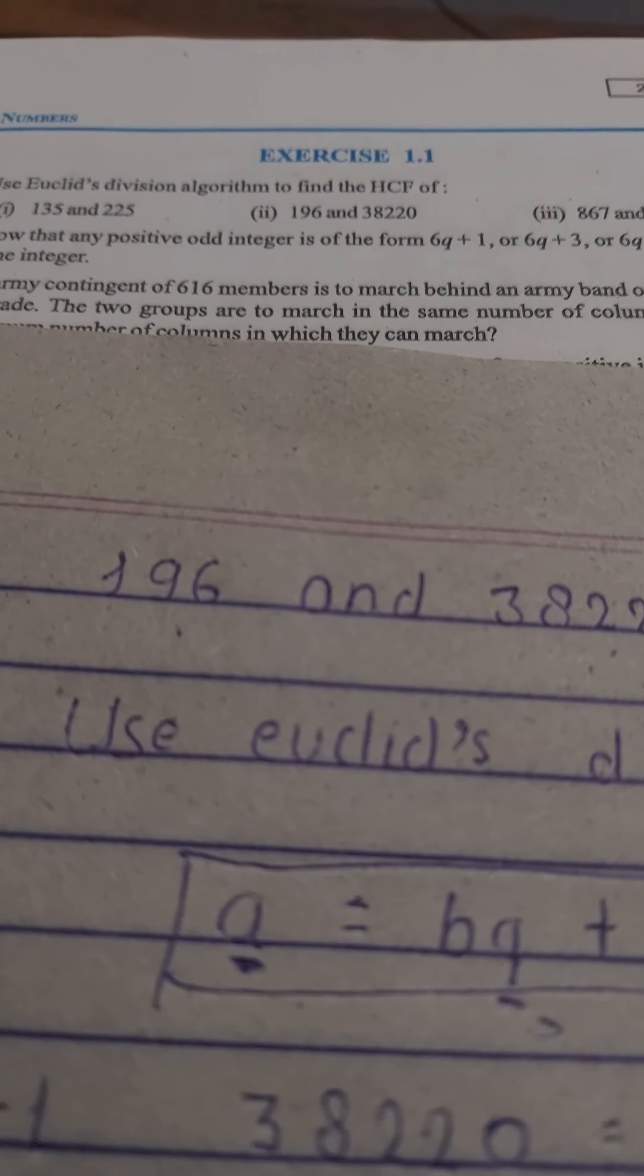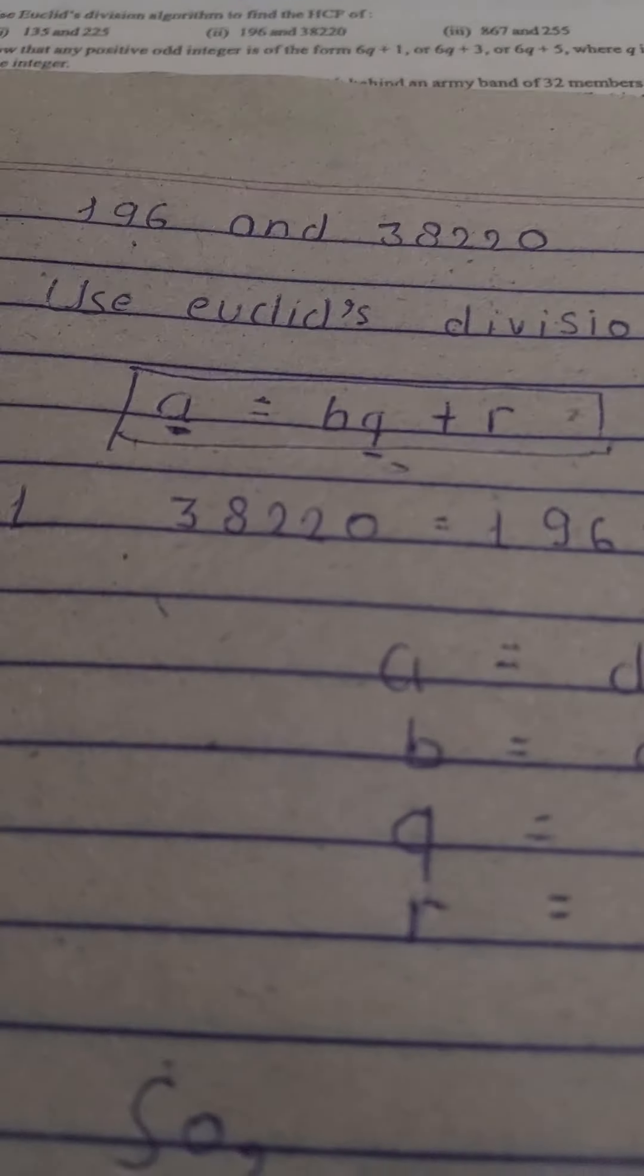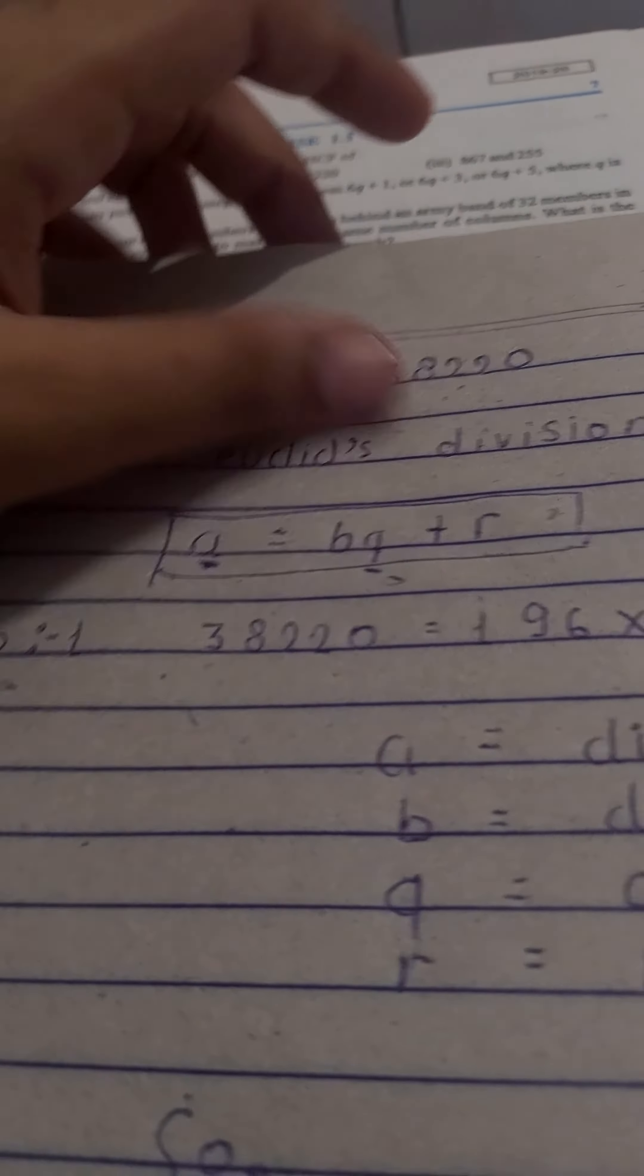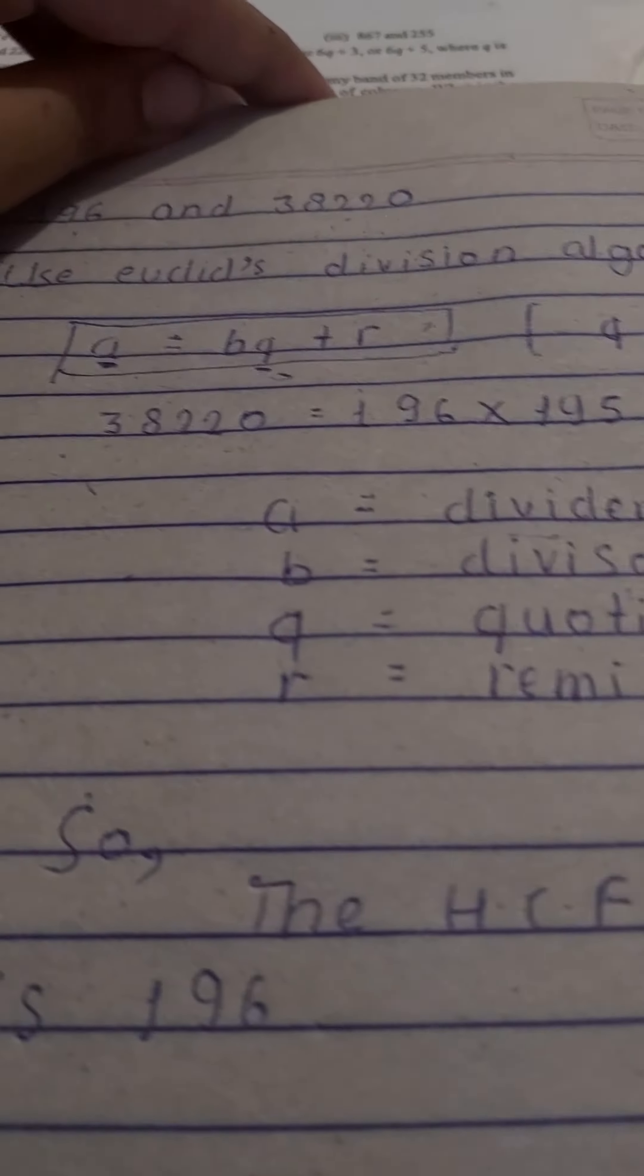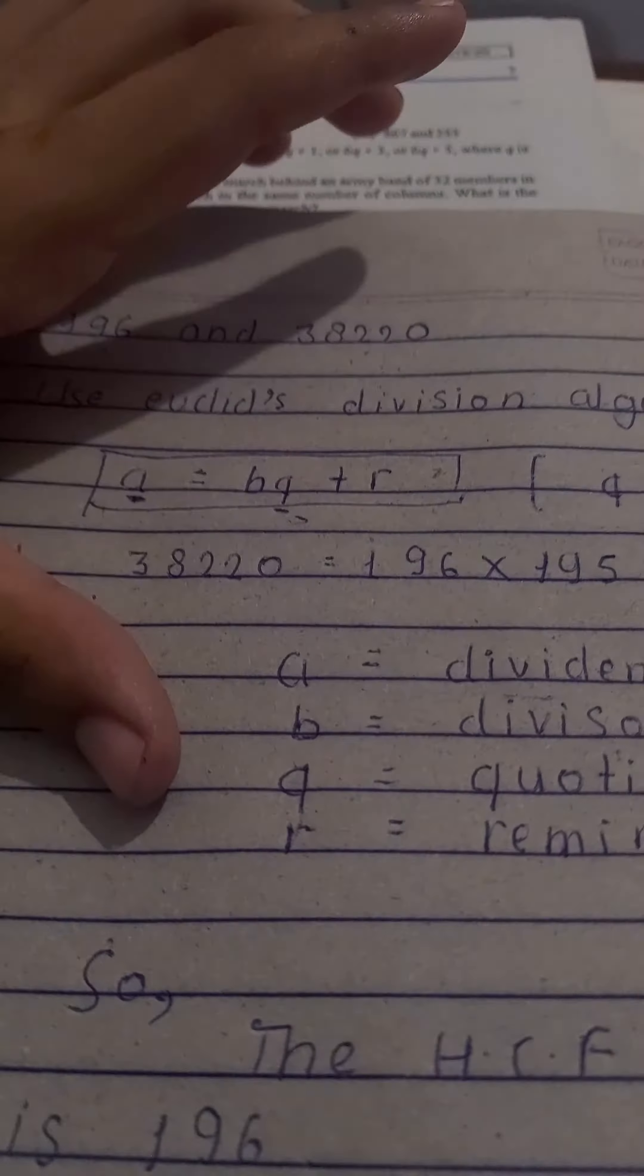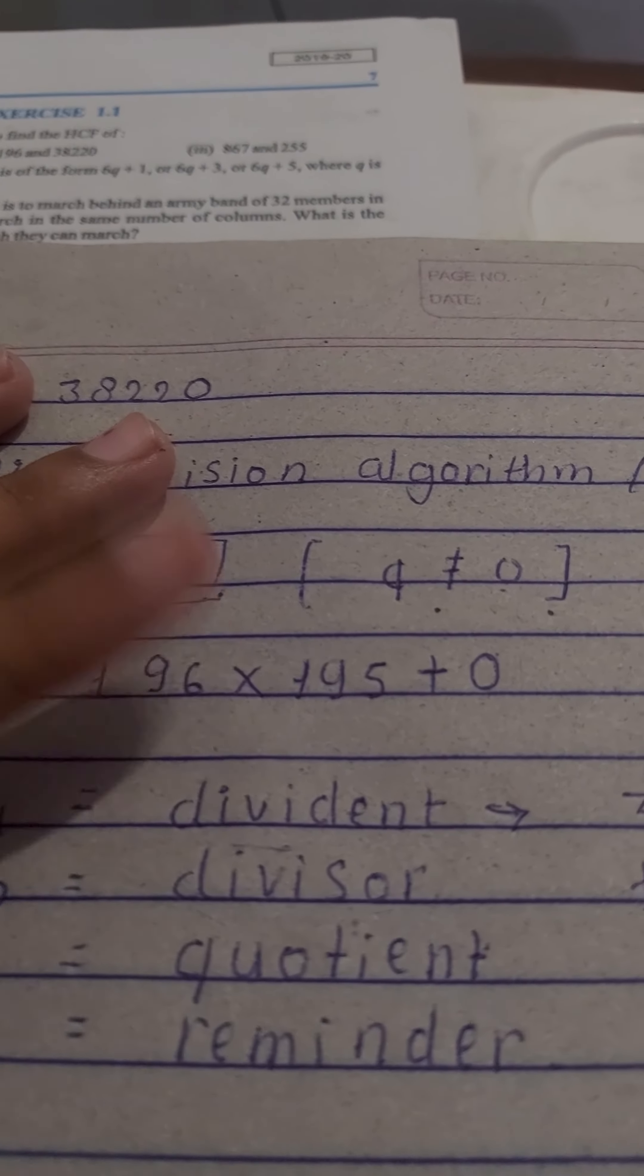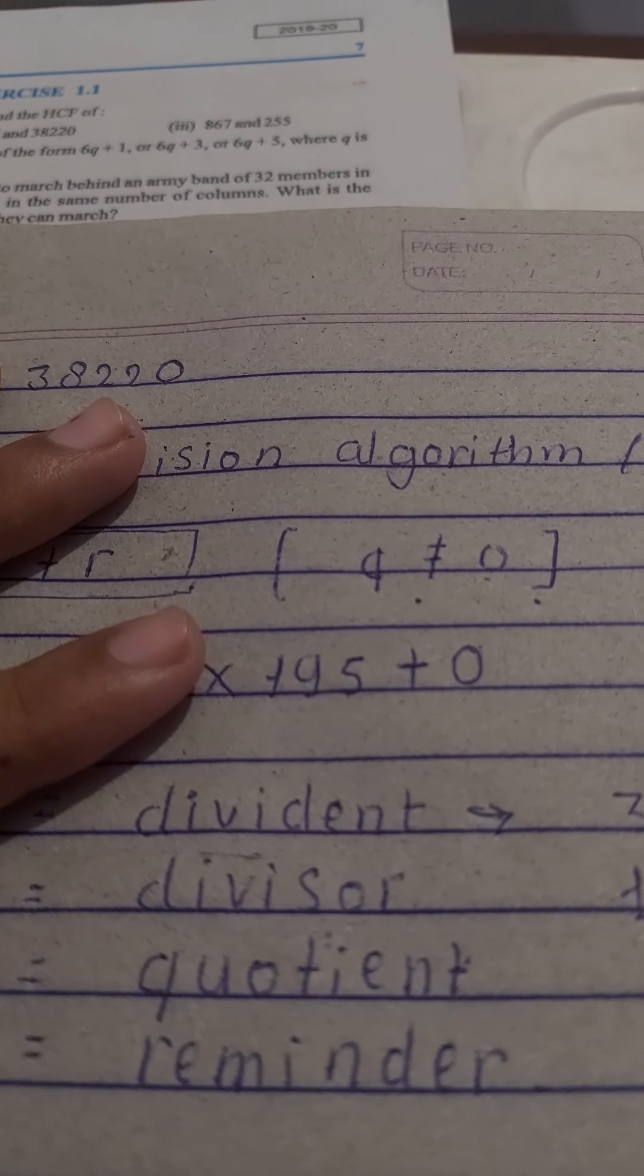Here I write: use Euclid's division algorithm. The formula is a = bq + r. We'll use this formula in this question, and the condition is q ≠ 0.